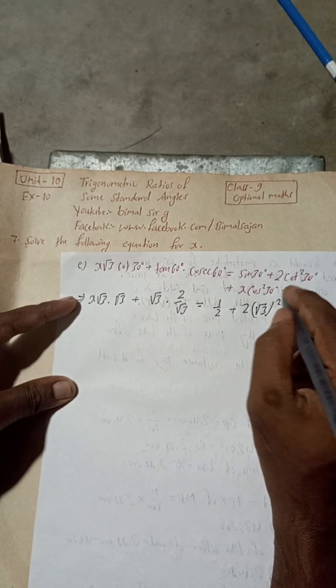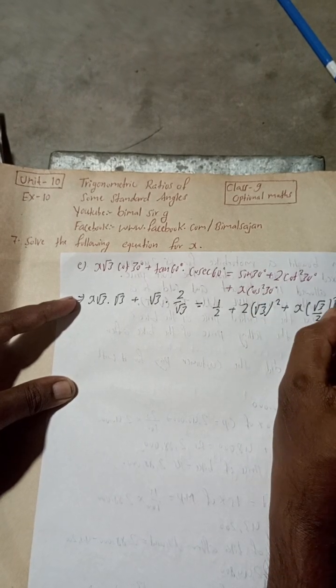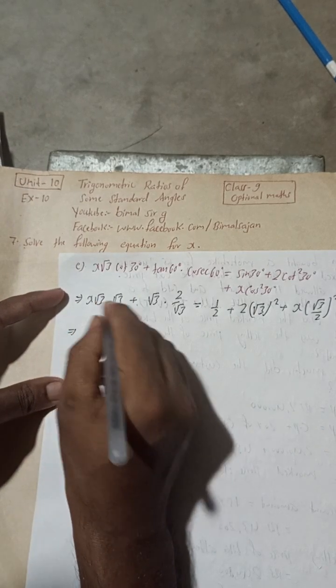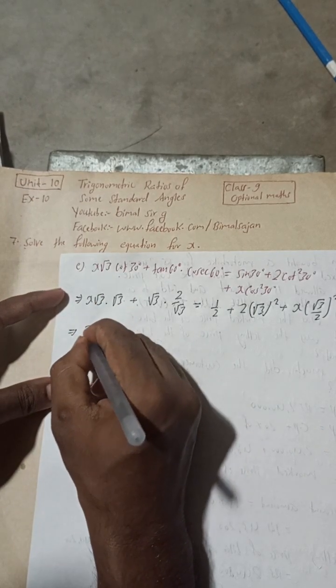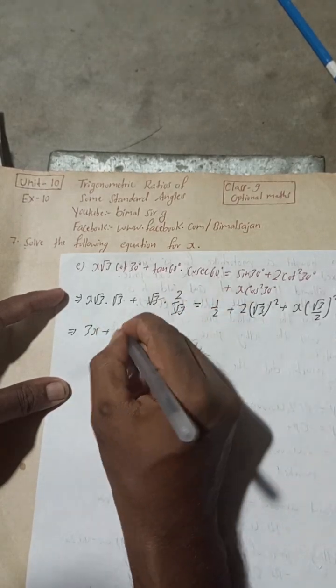Cot 30 value is √3 by 2, but there is a square, so whole square. Now √3 into √3 is 3, so this is 3x.